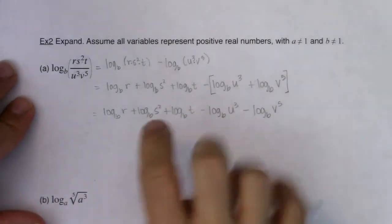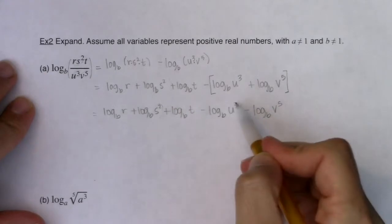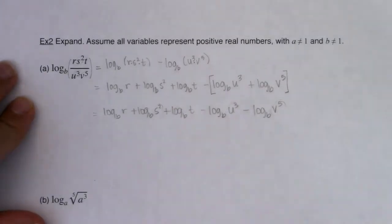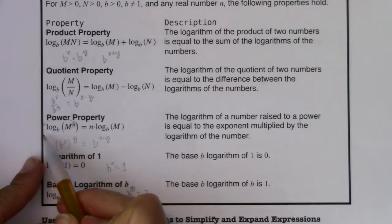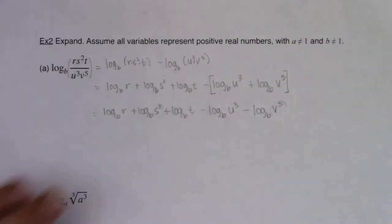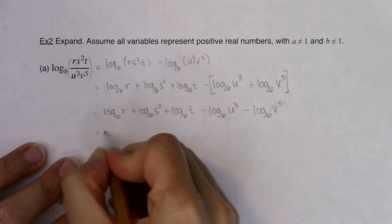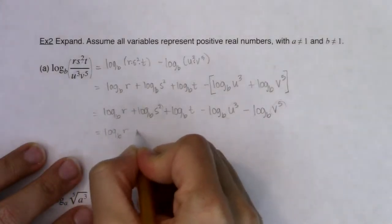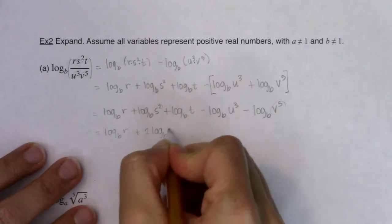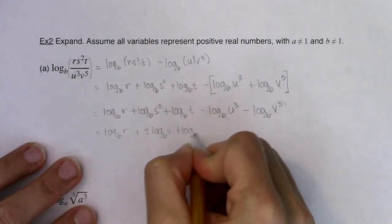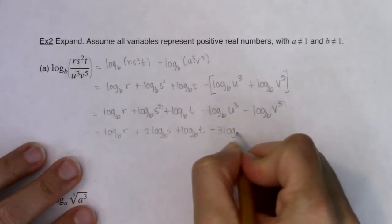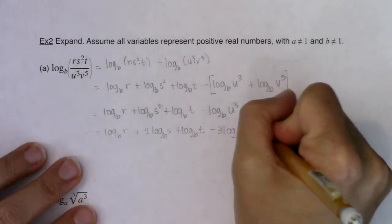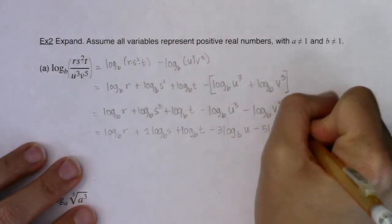I'm almost done, but I still have these powers here — s squared, u cubed, and v to the fifth. So I'm going to apply the power property. The power property says whatever those exponents are, you can bring them down in front of the logarithm as multiplication. I will leave this as log base b of r, plus 2 times log base b of s. I don't have to do anything to the log base b of t. I will bring the 3 out in front: minus 3 log base b of u, and then minus 5 log base b of v.